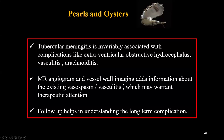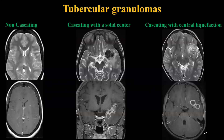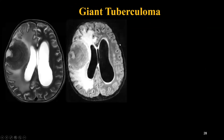Talking about tuberculomas: they can have a granuloma form which can be non-caseating, which is hyperintense on T2, or caseating with a solid center — a T2 hypointense lesion showing peripheral enhancement — or caseating with central liquefaction, which is a T2 hypointense periphery with a central area of hyperintensity that may show diffusion restriction and will show peripheral enhancement. These are the different forms of tubercular granuloma commonly encountered.